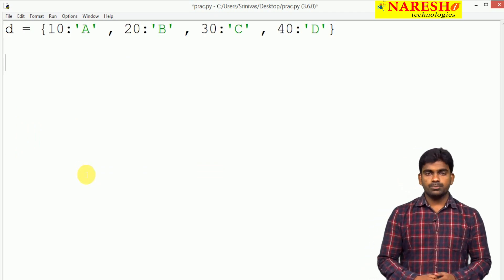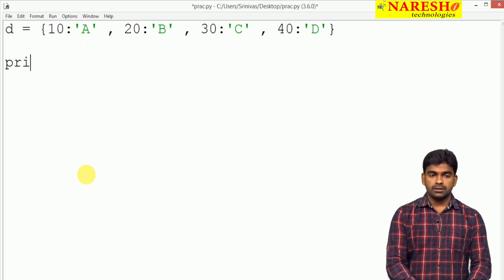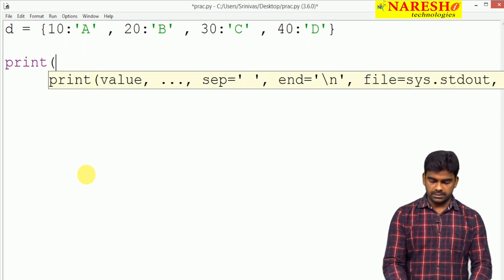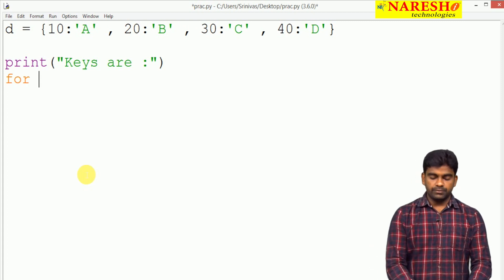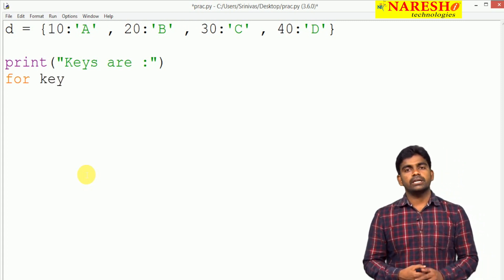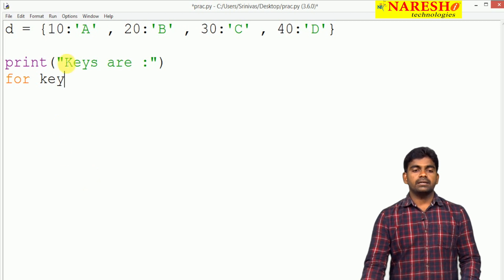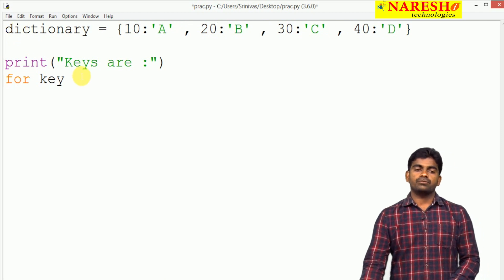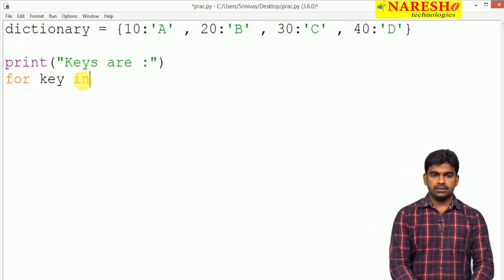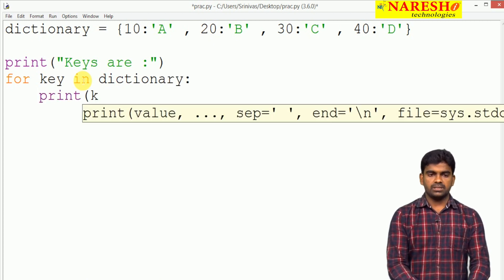I just want to display all elements using for loop. We can process keys only. For key in dictionary, for key in dictionary we are printing that key. This is the simple way.